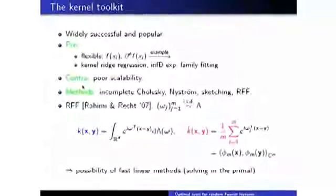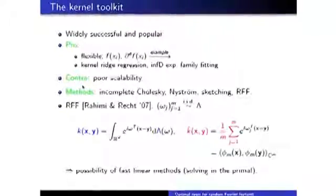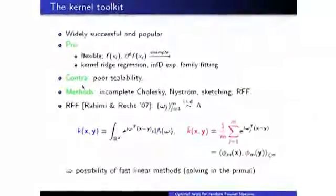Kernel techniques represent a widely applicable and popular technique to capture complex relations. Typical applications of kernel machines are tasks which can be expressed in terms of function values and function derivatives. Just to give you two quick examples, kernel ridge regression is an example for the first case where we have input output pairs, and we want to capture this relation from a specific Hilbert space determined by a kernel. Infinite dimensional exponential family fitting is an instance for the second problem, which can be expressed in terms of kernels and kernel derivatives. Unfortunately, this flexibility of kernel methods has a price. They typically scale reasonably poorly.